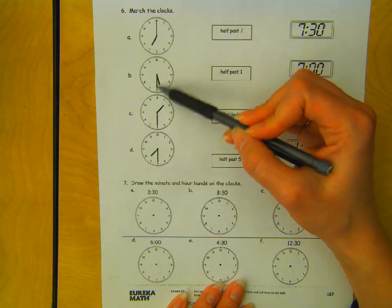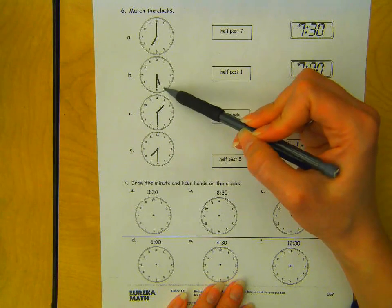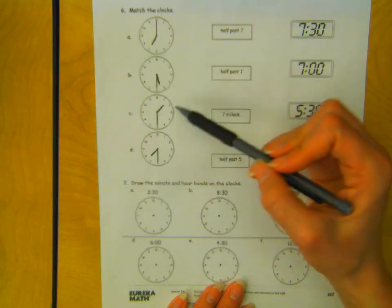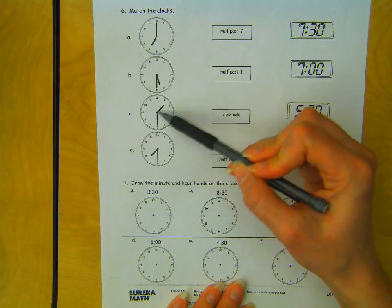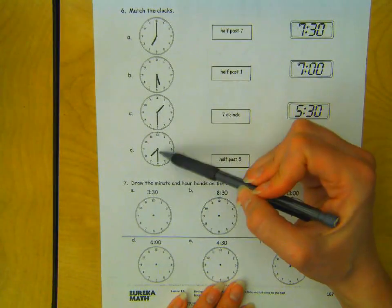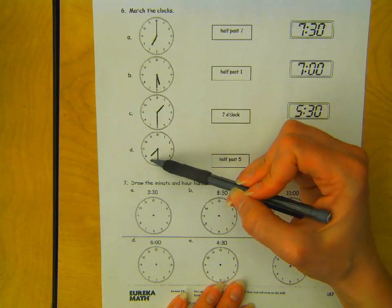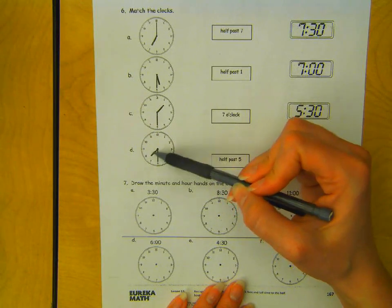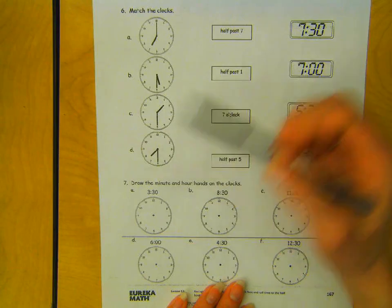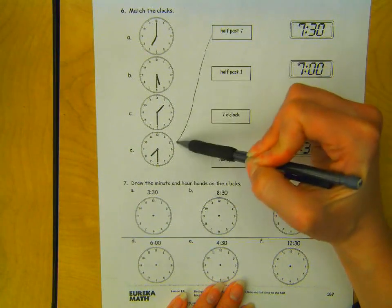This one's half past, but not half past 7. This one's half past, but not half past 7. And this one is half past 7. It's between 7 and 8, halfway to 8, so it's half past 7. So I'm going to draw a line to that one.